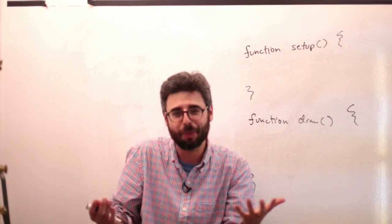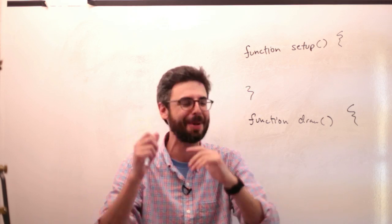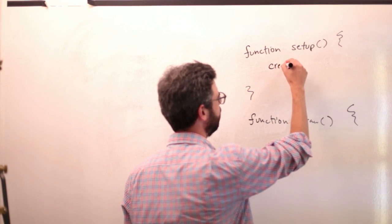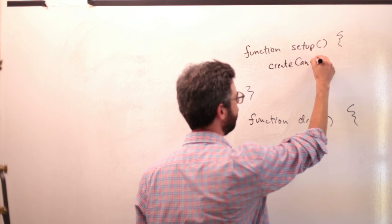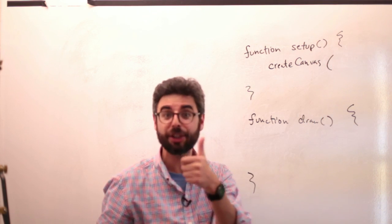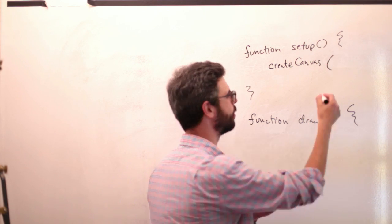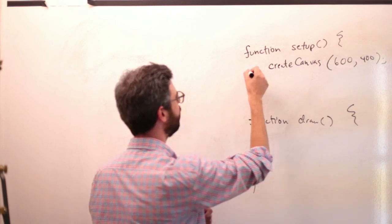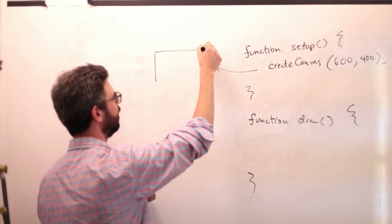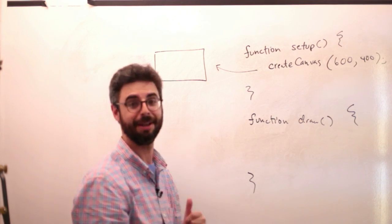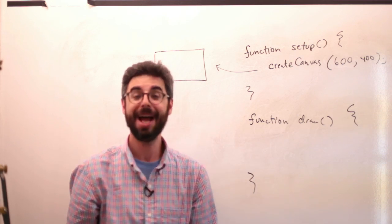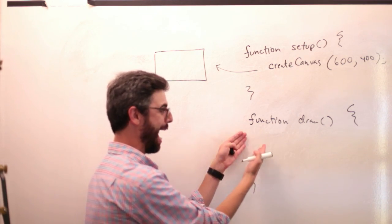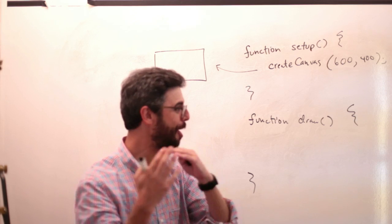As I mentioned in the last video, setup is a place where you put createCanvas. And createCanvas requires two arguments — a width and a height — and you get this nice rectangle on the screen, a canvas for you to draw to. And when it's time to draw to that canvas, you add some instructions in the draw function.